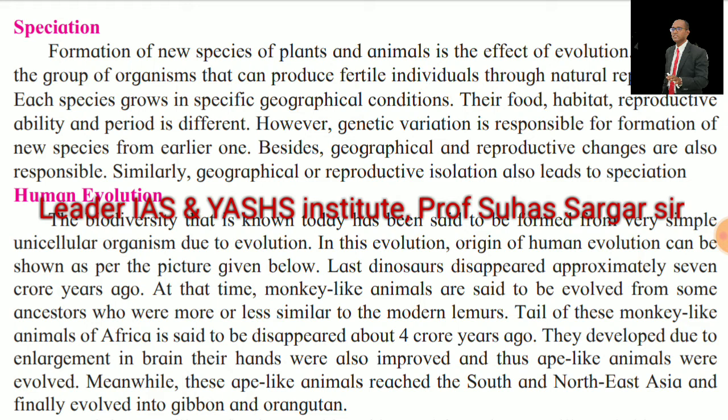Speciation: Formation of new species of plants and animals is the effect of evolution. A species is the group of organisms that can produce fertile individuals through natural reproduction. Each species grows in specific geographical conditions, with different food, habitat, reproductive ability, and periods. Genetic variation is responsible for formation of new species from earlier ones. Besides, geographical and reproductive changes are also responsible. Similarly, geographical or reproductive isolation also leads to speciation.